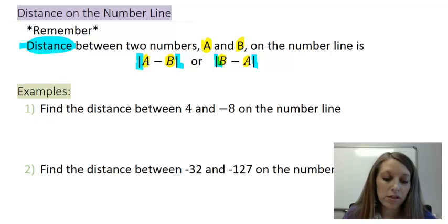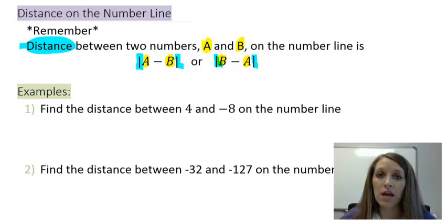So let's do an example of this. Find the distance between 4 and -8 on the number line. Now we can do this by drawing up a number line and just completely ignoring that there is a formula there in the first place. And that's okay for an example like this when your numbers are fairly close together.